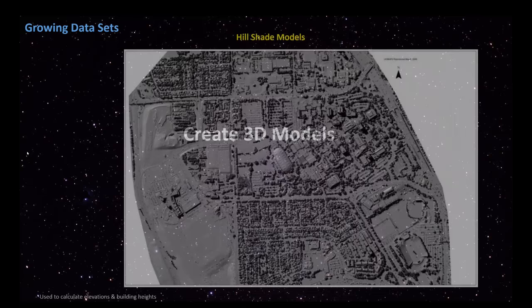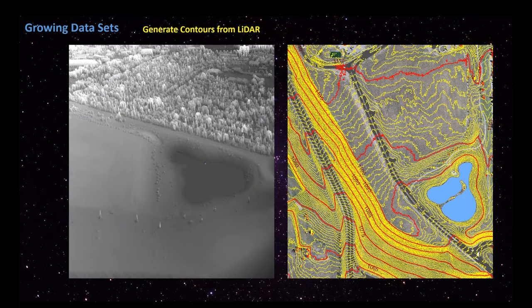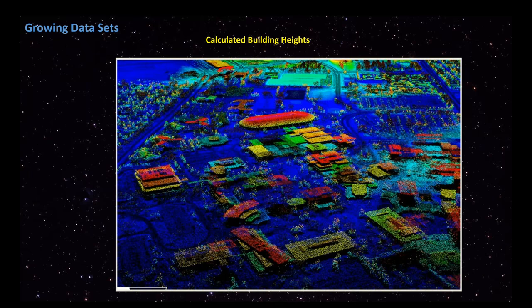The first thing we wanted to do was generate some 3D models. Using our LiDAR we had hillshade models, which started to give us a quick overview of things we needed to know about our campus — including where dirt had been piled up from construction and what we'd have to deal with in the future. It also allowed us to create contours, so we took our LiDAR and generated a layer of contours, producing another data set from our original data. The generation of our LiDAR helped us create digital surface models, and we calculated and gathered building heights so we could start generating other information.